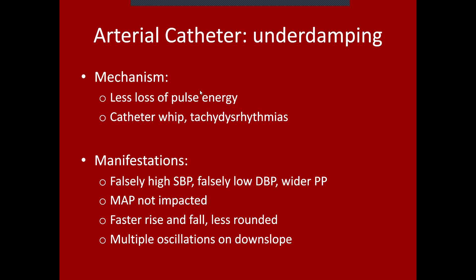With underdamping, you can have falsely high systolic blood pressures, falsely low diastolic blood pressures, and a wider pulse pressure. Interestingly, the mean arterial pressure is not impacted on an underdamped — or for that matter, an overdamped — A-line. The waveform will show a faster rise and faster fall, be sharper and less rounded, with multiple oscillations on the downslope.